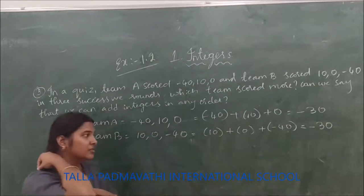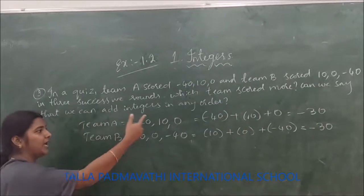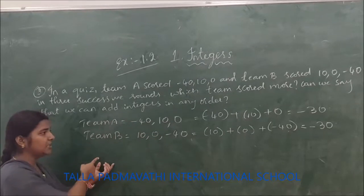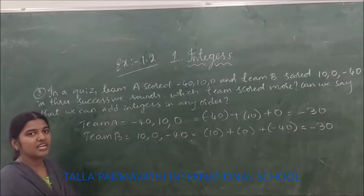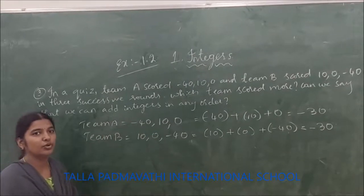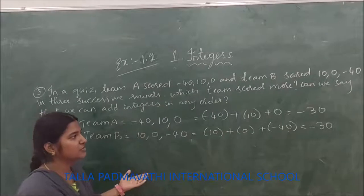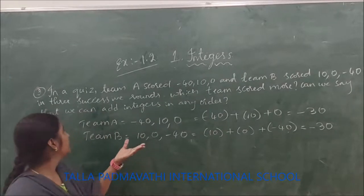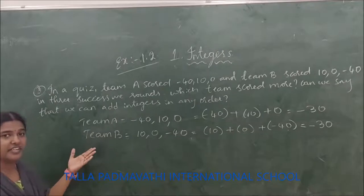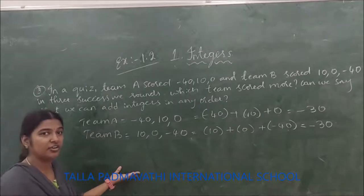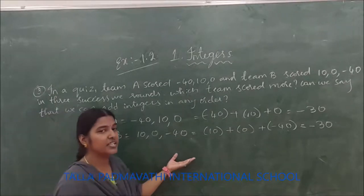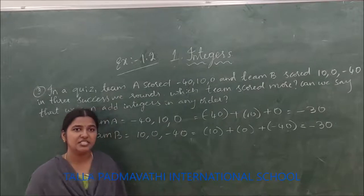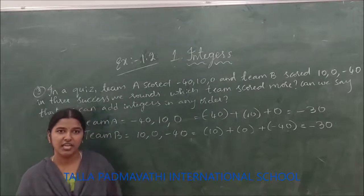Okay children, team A scored minus 30 and team B scored minus 30. So we can't say which team scored more because both of them have scored the same. By this we can say that we can add integers in any order.